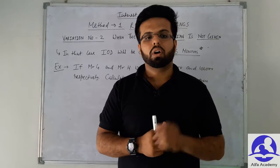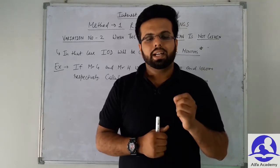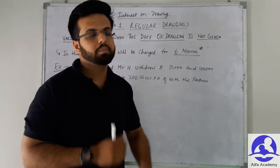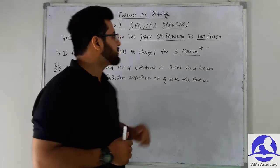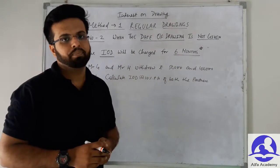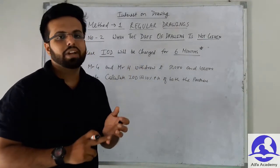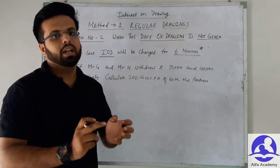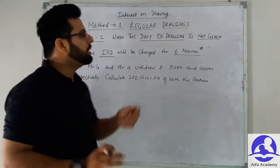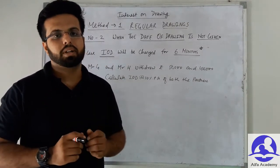In this video we are going to talk about Variation Number 2 of interest on drawing — when the drawings are regularly made but the date of drawing is not given. In this case, interest on drawing is charged for 6 months. Whenever the drawing date is not given in the question, such as beginning of every month, mid of every month — if no date or interval is specified, interest on drawing is charged for 6 months.